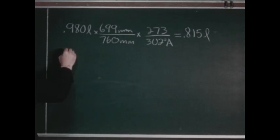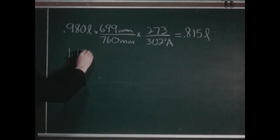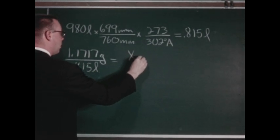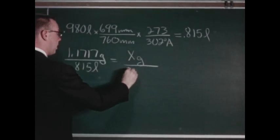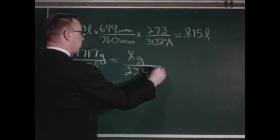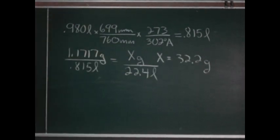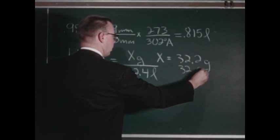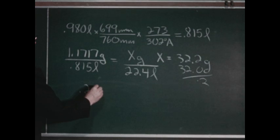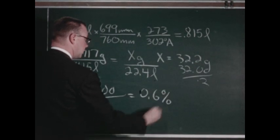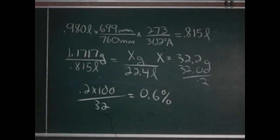We know that this oxygen weighed 1.1717 grams and occupied a volume of 0.815 liters at STP. We want to know what weight of oxygen would occupy a volume of 22.4 liters. Solving this proportion for x, we find that x equals 32.2 grams. This compares with our accepted value of 32 grams quite well. Our error is 0.2 grams. Percentage-wise, our error is 0.2 times 100 over 32, or 0.6 percent — six-tenths of one percent. It is possible, then, using this method, to calculate rather accurately the molecular weight of oxygen.